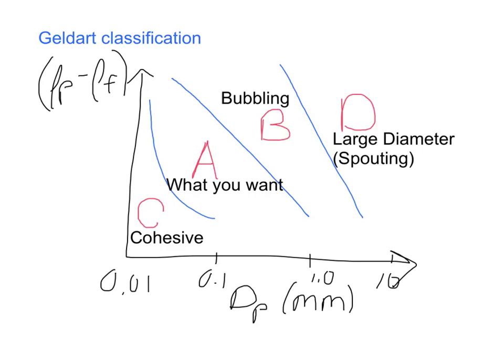One way I like to think about these four classifications of powders—A, B, C, and D—is that A is what you want. You want the regular particles that will fluidize and may eventually become bubbling. Everyone wants to get an A in a course, and therefore that is the ideal situation. B is for bubbling, and that's self-explanatory. C is for cohesive, meaning that the particles are sticking together so strongly that they won't fluidize. And then D you can think of as diameter, as a large diameter particle, and these larger diameter particles will form these spouting beds.